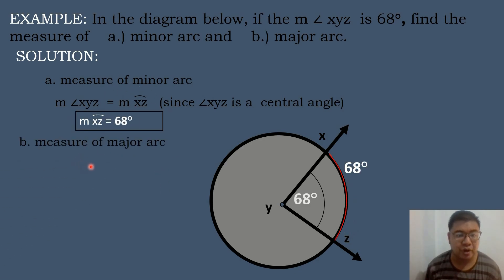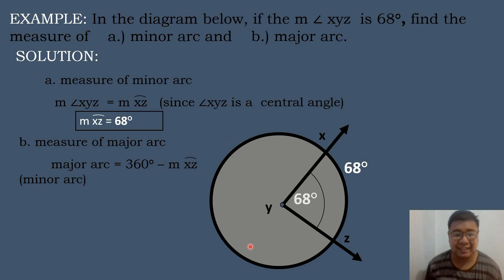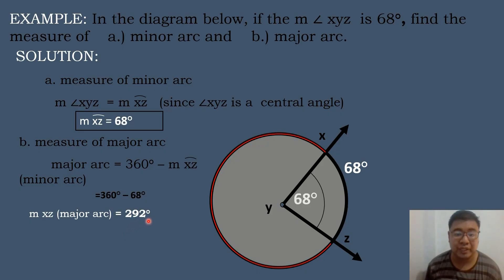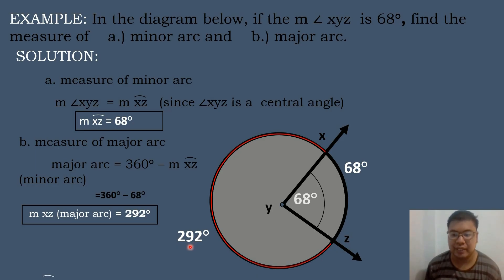Next, let's solve for the major arc. To find the major arc, we subtract 68 degrees from 360 degrees because the measure of a circle equals 360 degrees. So 360 degrees minus 68 degrees equals 292 degrees. The measure of the major arc is equal to 292 degrees.